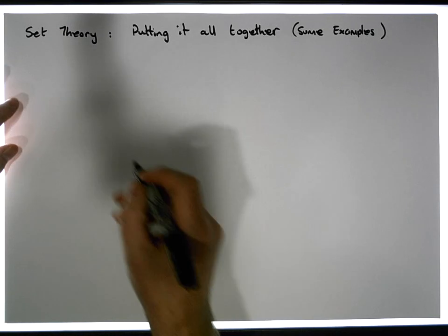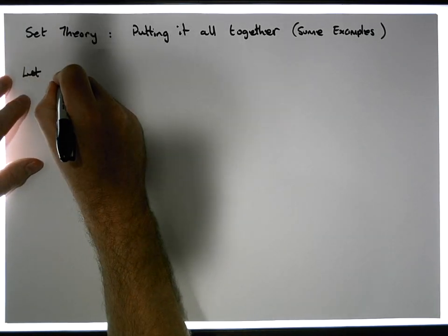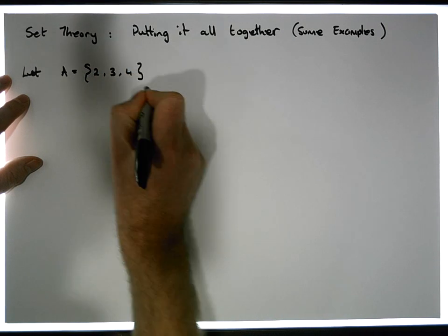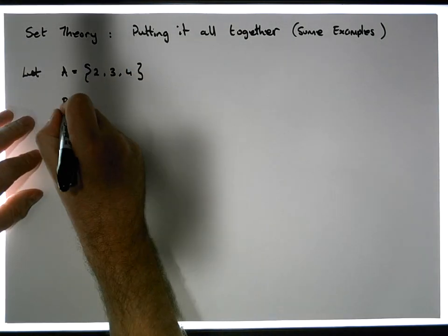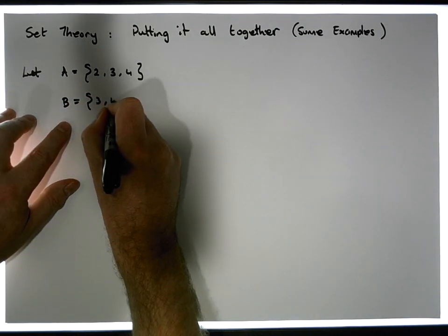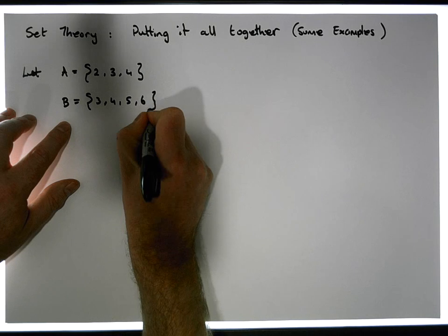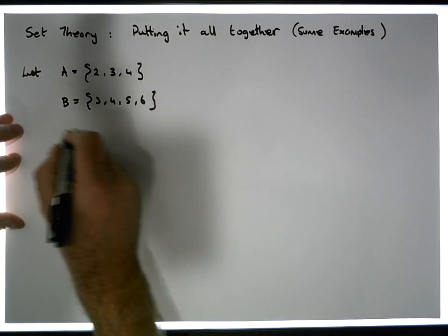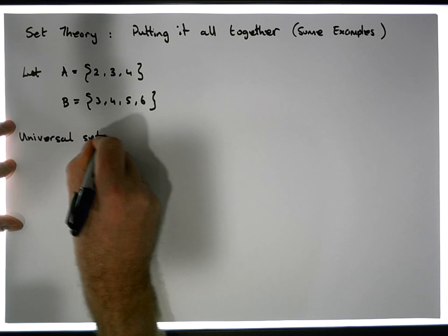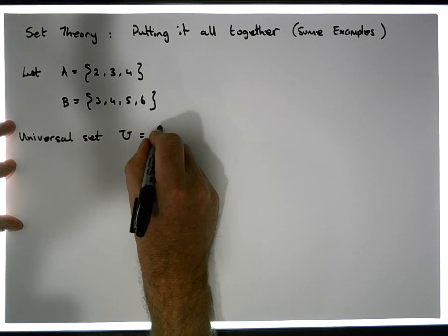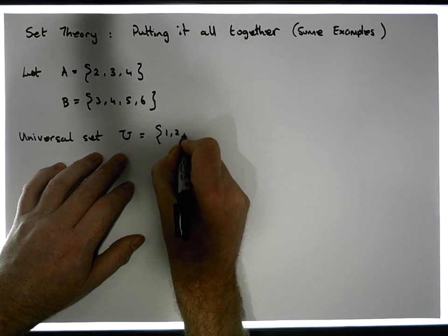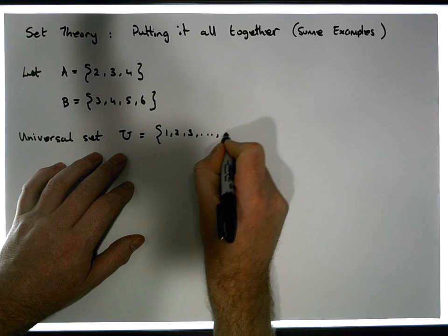Let's choose a few sets. Let A equal the set containing the values 2, 3, and 4. Let B be the set containing the values 3, 4, 5, and 6. And let the universal set U be the set containing the values 1 through to 9.